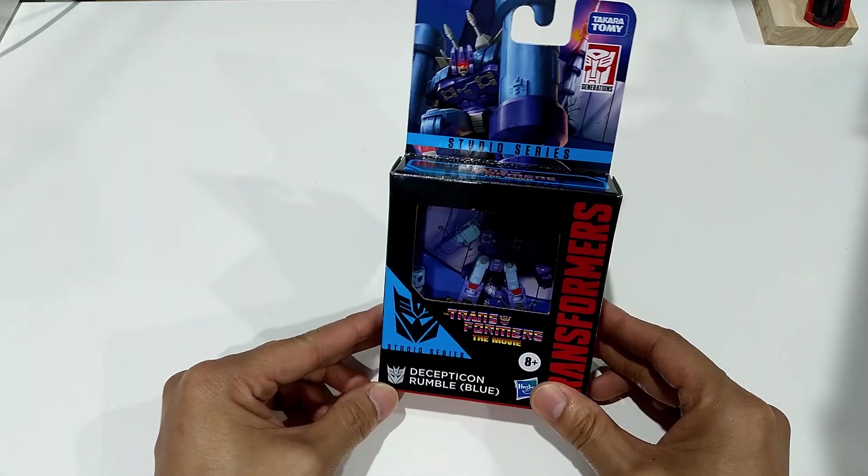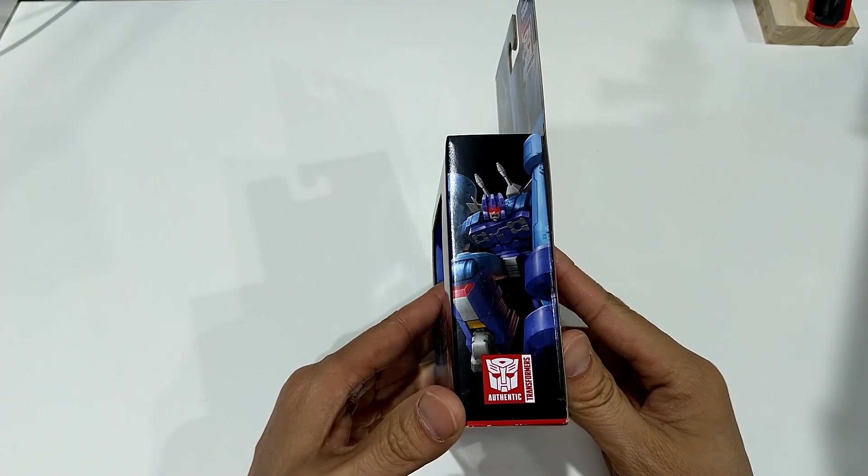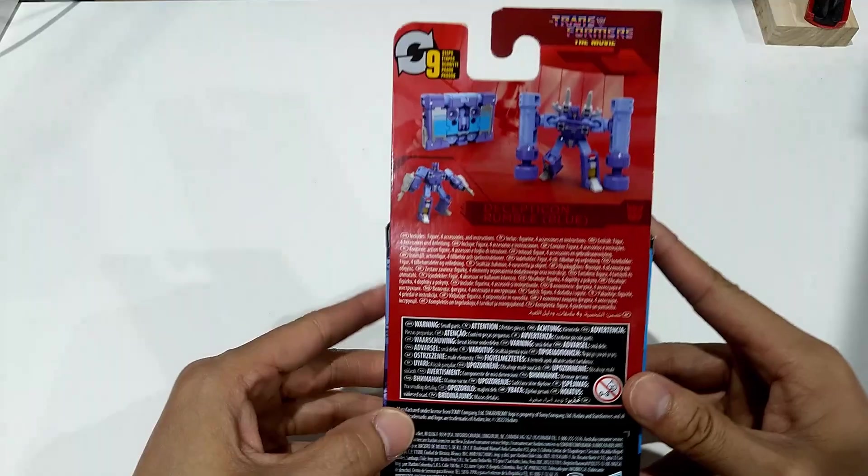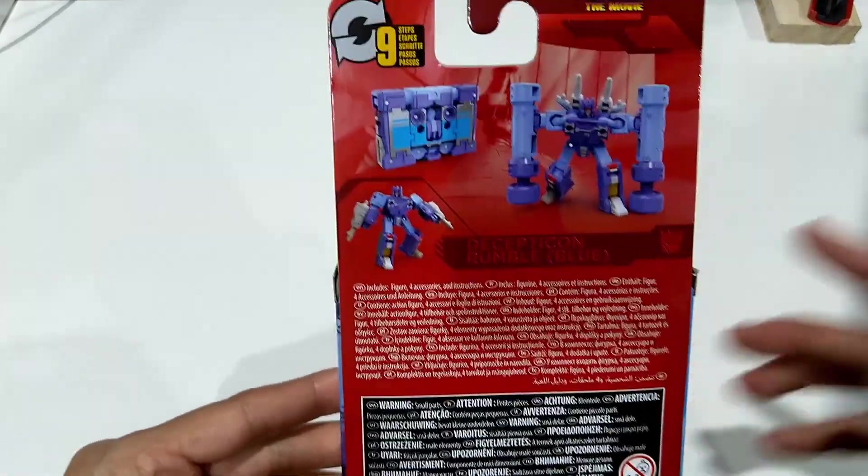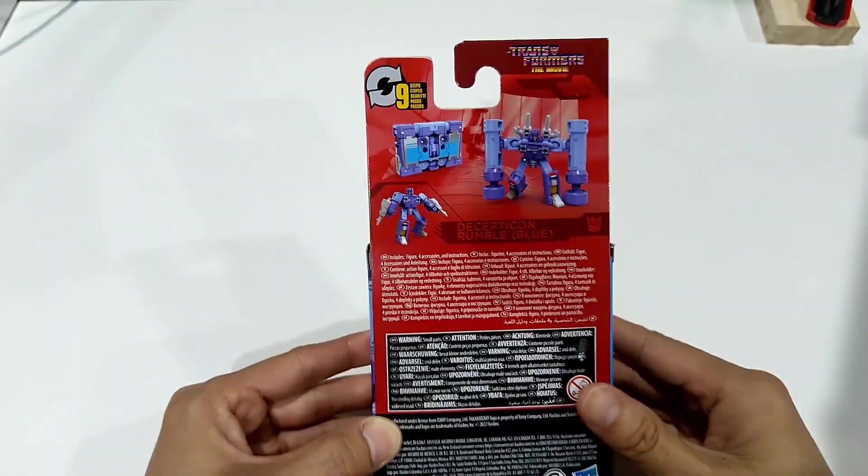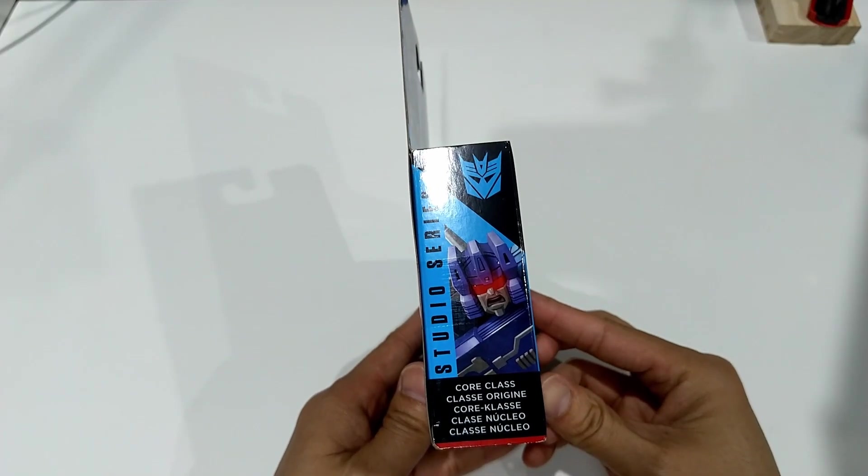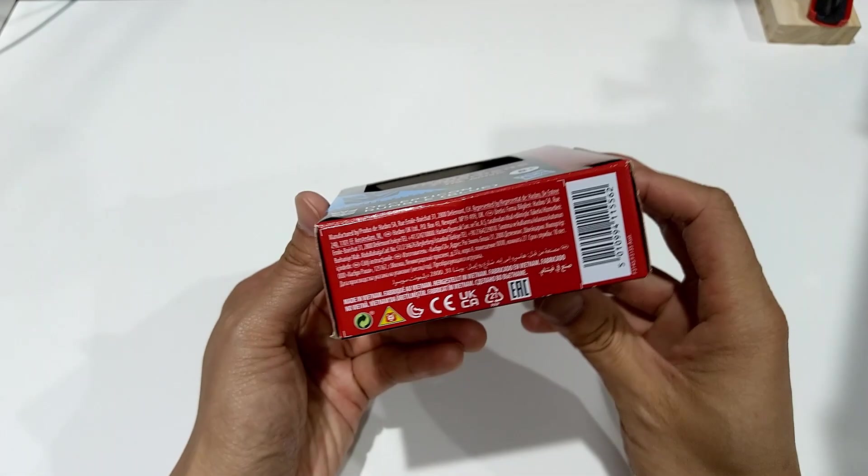So Rumble, Blue. Studio Series from the movie. This is the box. Cool picture on the side. Looks pretty cool here on the back of the box there. Yelling face, core class, barcode.